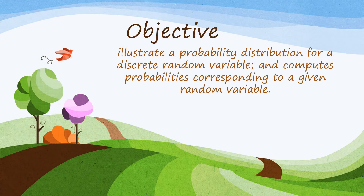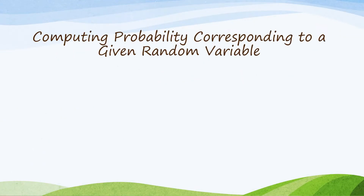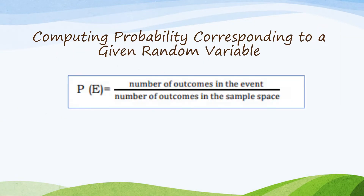Our objective is to illustrate a probability distribution for a discrete random variable and compute probabilities corresponding to a given random variable. To compute probability corresponding to a given random variable, we will use the formula: P(E) equals the number of outcomes in the event over the number of outcomes in the sample space.